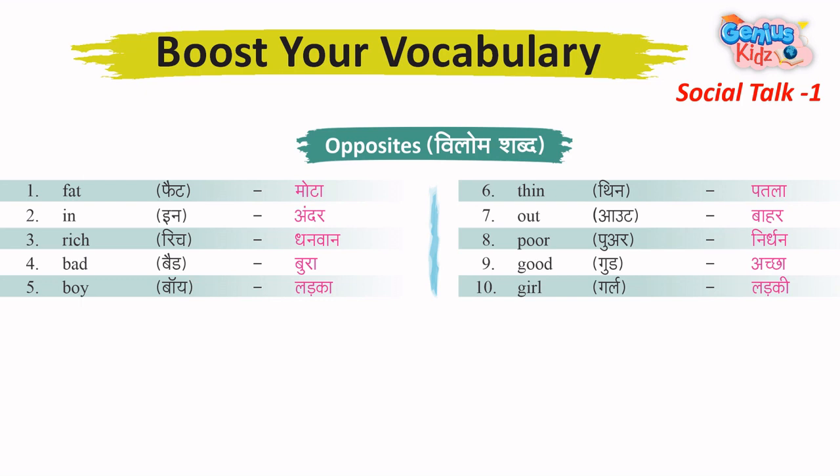6. Thin – Patla. 7. Out – Bahar. 8. Poor – Nirdhan. 9. Good – Acha. 10. Girl – Ladki.